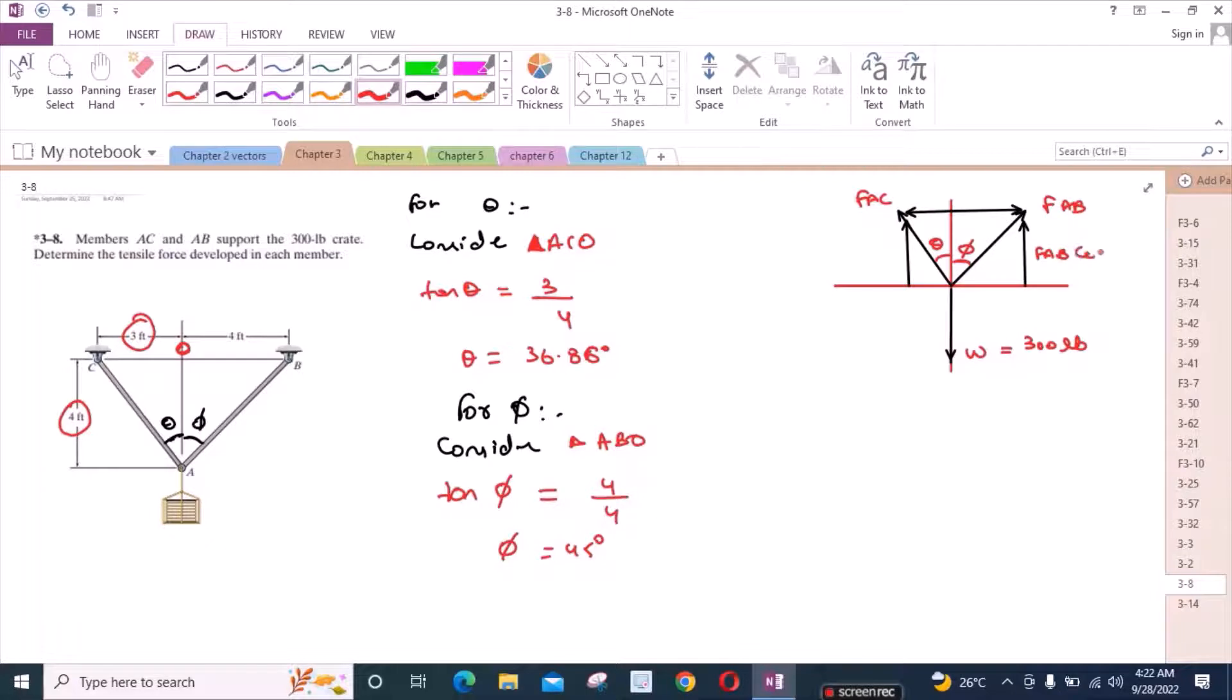Let's call this FAB cos phi and this one is FAB sin phi. This right here is FAC cos theta, and this component is FAC sin theta.